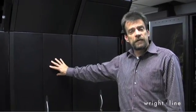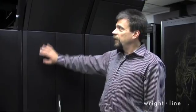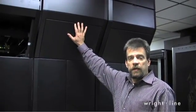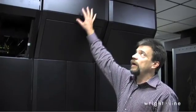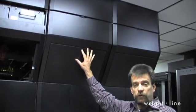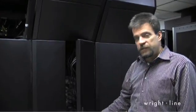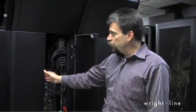The RightLine heat containment system consists of rear doors that are solid, a chimney that mounts to the rear of your rack and exhausts into a return plenum. What this consists of is the solid doors.